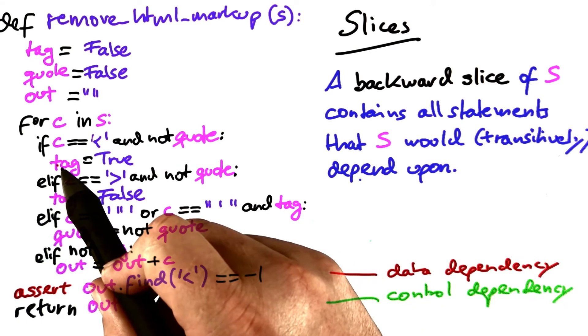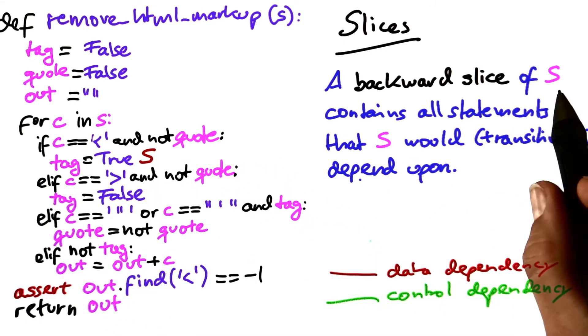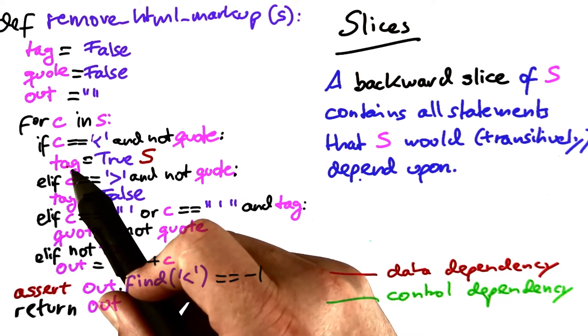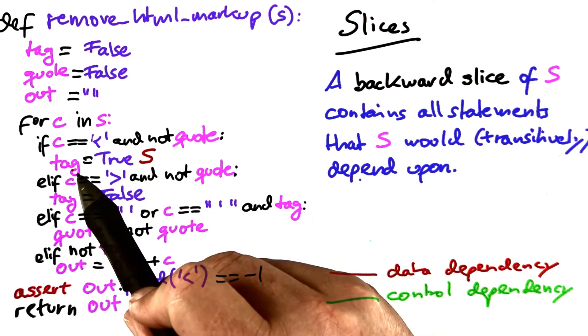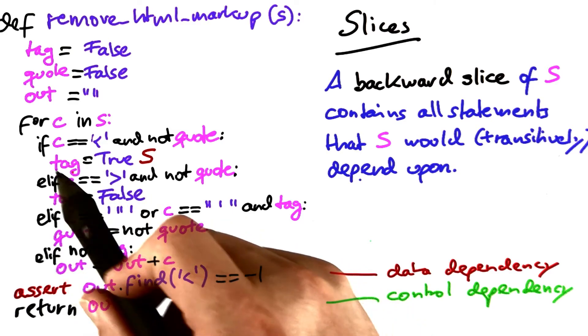As an example, let's take a look at the statement 'tag is true'. This is our statement s. Now let's see what's all contained in the slice of tag. First of all, there's no direct data dependency because no variable is being read in here.